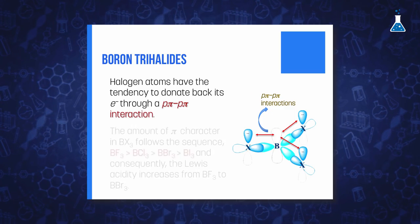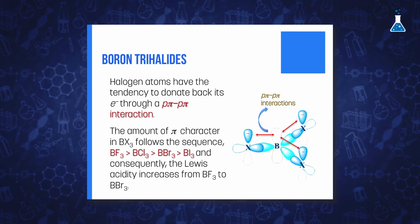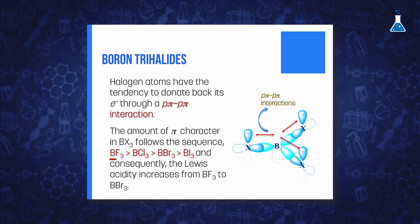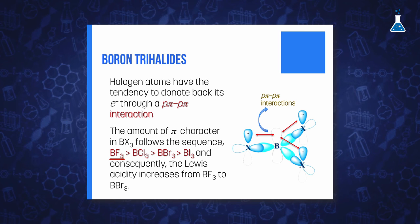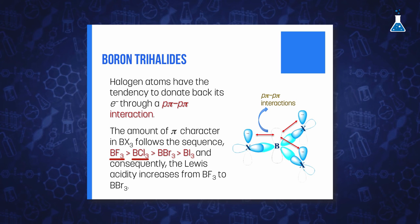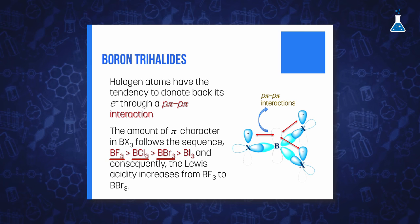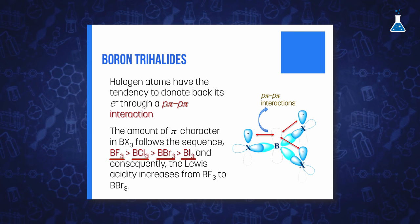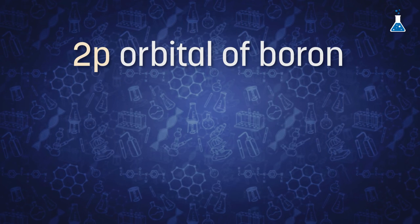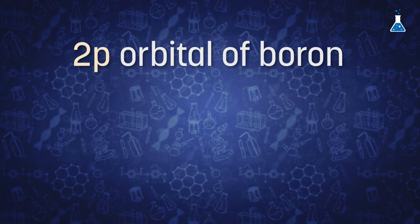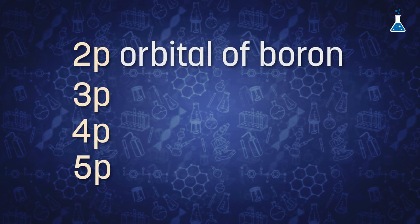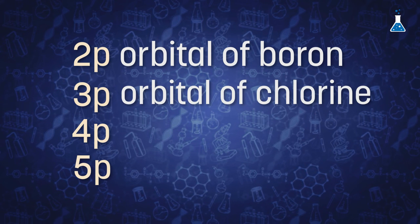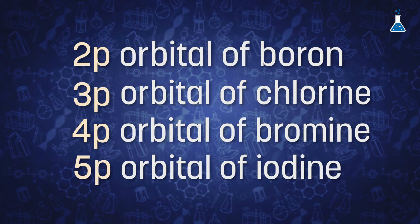This anomalous behavior is explained by the relative tendency of the halogen atoms to donate back their electrons through a p-π interaction. As a result of this back-donation of electrons from the halogens to boron, the electron deficiency is reduced and the Lewis acid character is decreased. The tendency to form this type of bonding is maximum for boron trifluoride and diminishes as we move to boron trichloride, boron tribromide, and boron triiodide — probably due to the difference in energy between the 2p orbital of boron and the 3p, 4p, and 5p orbitals of chlorine, bromine, and iodine respectively.